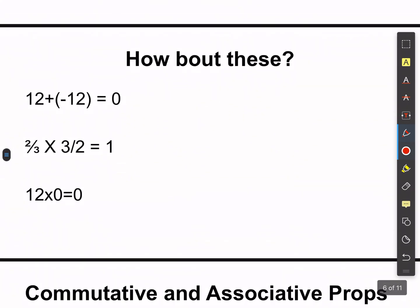I know I'm moving fast — hopefully you're pausing the video and taking notes. Notice: starting with 12, what can I add to get 0? This is called the additive inverse property. An inverse gives me 0 when adding, and when multiplying I want it to give me 1.